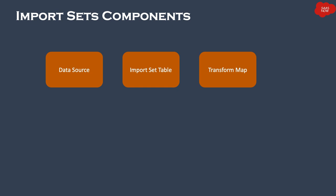Mapping Assist provides a visual way to map fields from source data to target data — you specify which field should be mapped to which field in your ServiceNow system. Mapping can also be done automatically; when you create a transform map, ServiceNow will offer the option to create these mappings automatically.